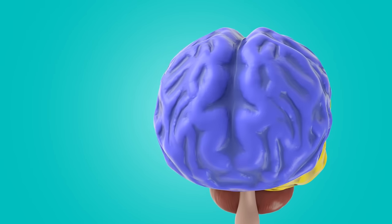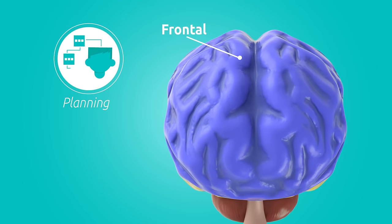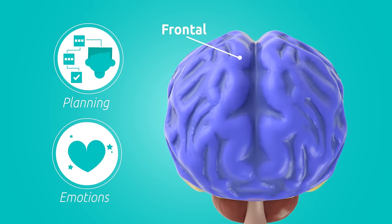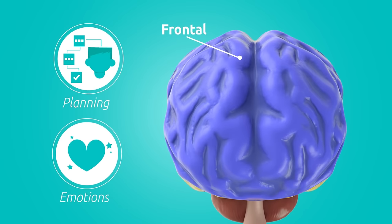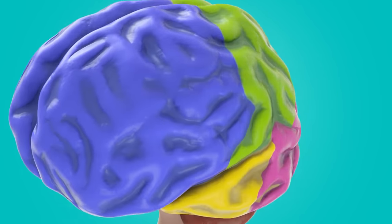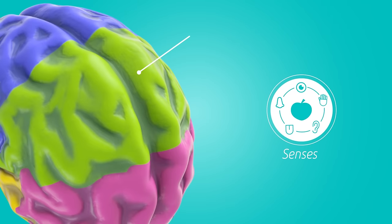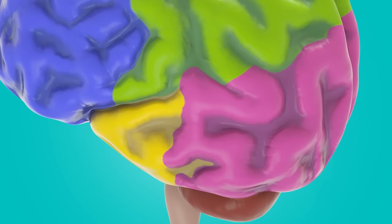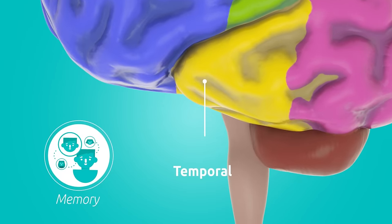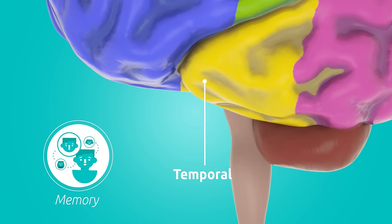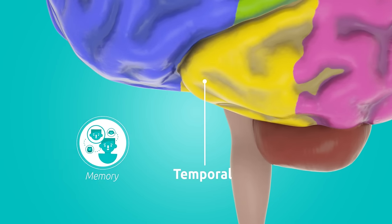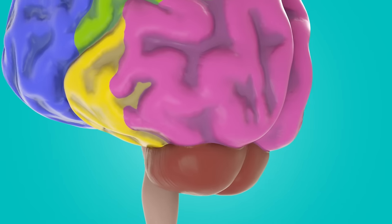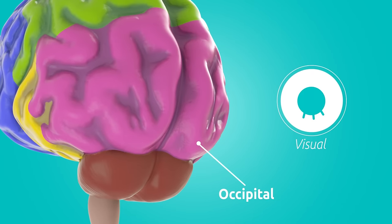The frontal lobe is in charge of planning our actions and controlling emotions. The parietal lobe is in charge of giving meaning to the information received by the senses. The temporal lobe is in charge of functions related to memory and face recognition. And the occipital lobe is in charge of processing visual information.